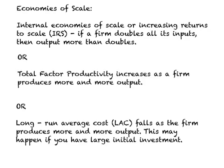A quick recap of what we have learned about economies of scale. This is also called internal economies of scale or simply increasing returns to scale or IRS. What this means is if a firm doubles all its inputs, then the output more than doubles. This happens because total factor productivity increases as a firm produces more and more output. When we have economies of scale, the long-run average cost falls as the firm produces more and more output, and this may happen because you have a large initial investment.